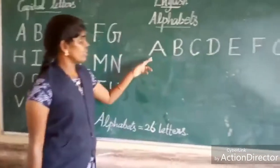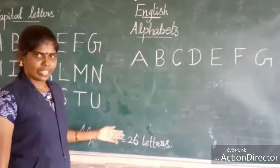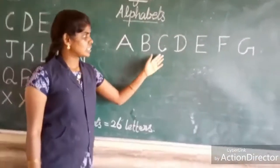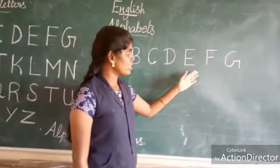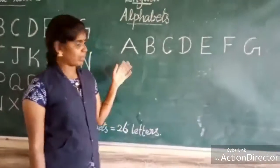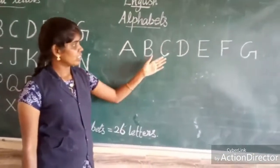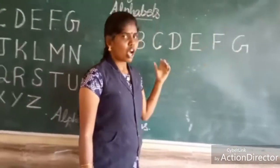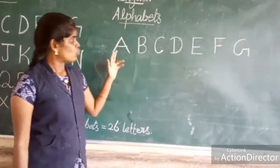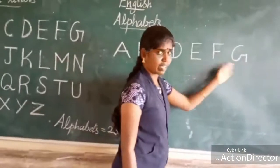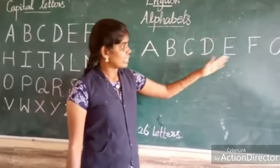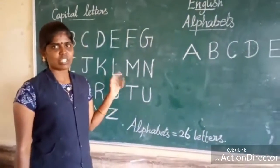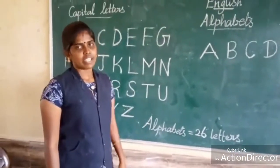This is alphabets. There are 26 letters in alphabets. Now see: A, B, C, D, E, G. Can you repeat me? Repeat: A, B, C, D, E, G. How many letters are here? One, two, three, four, five, six, seven. In this class we learned seven letters. Remaining letters we have to learn in the next class. Thank you, students.